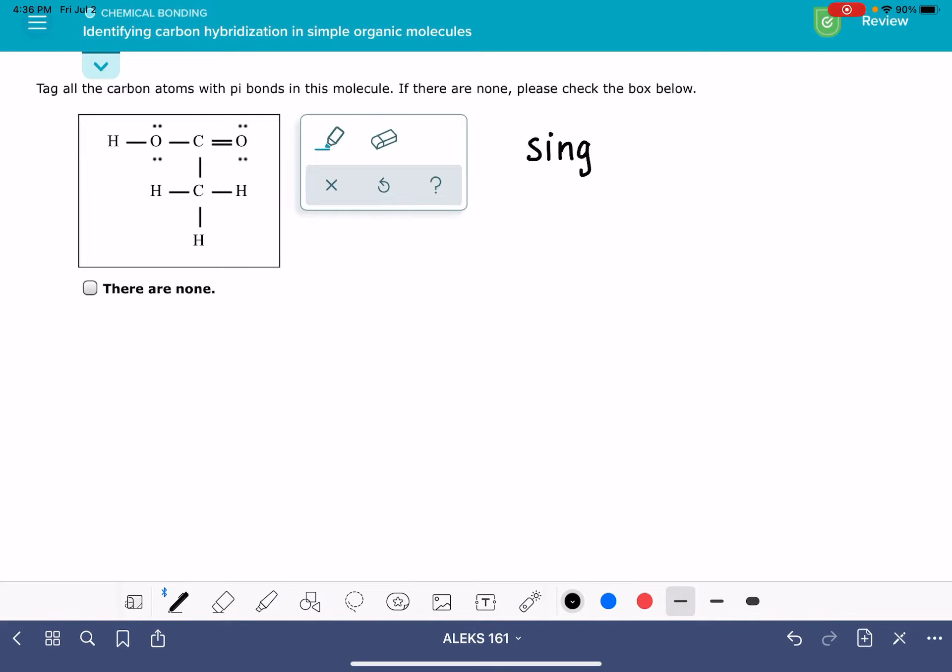A single bond in a molecule, whether it's associated with carbon or not, a single bond is also referred to as a sigma bond. A double bond contains